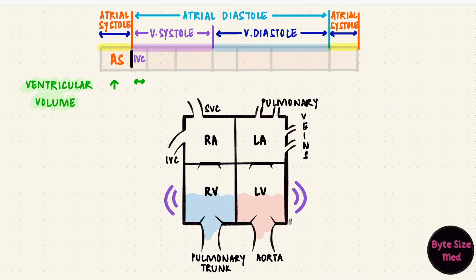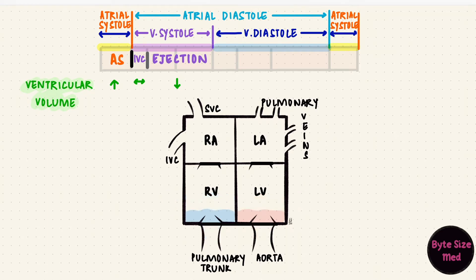At the end of this phase, the semilunar valves open and the ventricles eject blood out. There's rapid ejection and then slow ejection, but the point is that blood is leaving the ventricle, so the volume decreases. Now we're at the end of ventricular systole and the valves close.